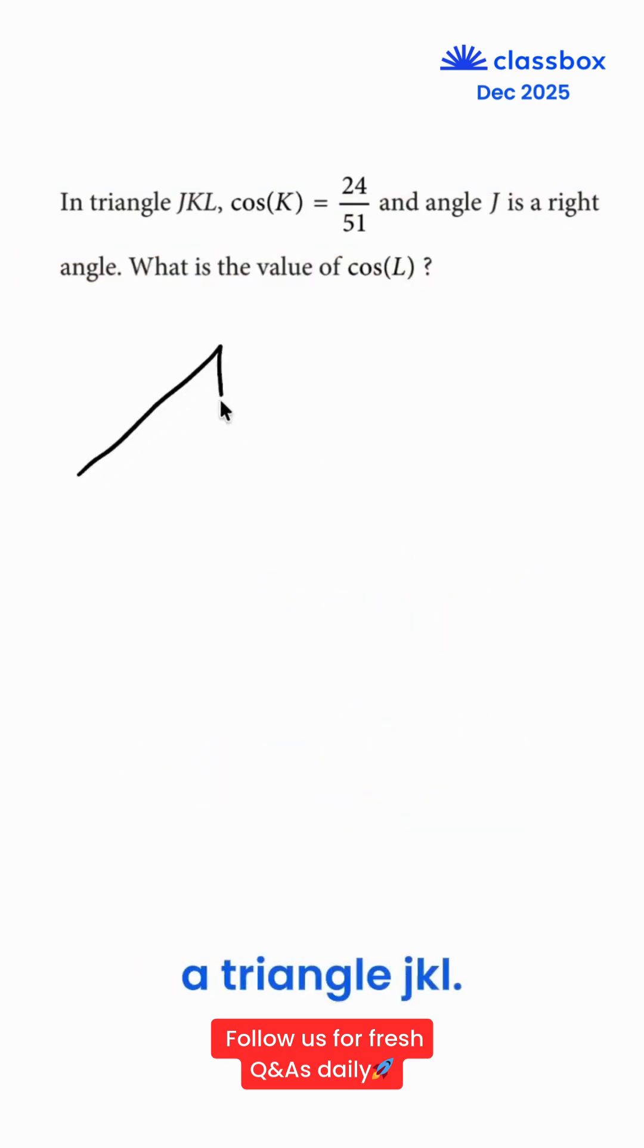We're given a triangle JKL. We're told that J is the right angle, and J is over here. It doesn't really matter where we put K and L. Let's put K over there and L over here.